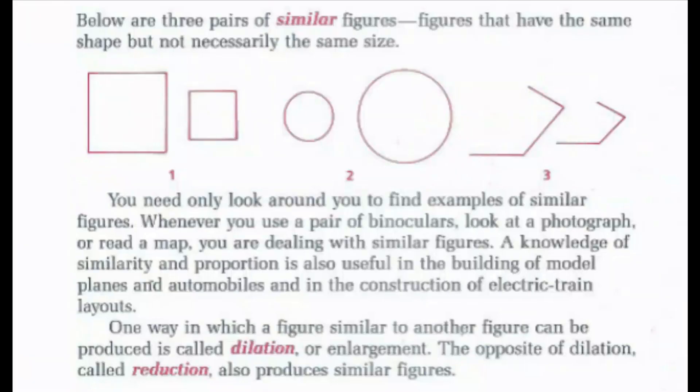In our examples below we can see three pairs of similar figures, or figures that have the same shape but not necessarily the same size. We can see in the first figure that we reduced the size, the second figure we enlarged the size, and the third figure we reduced the size.